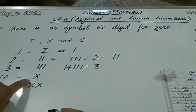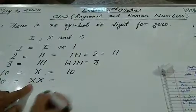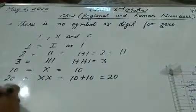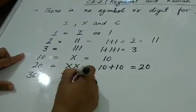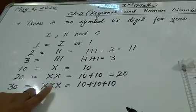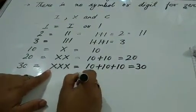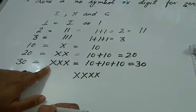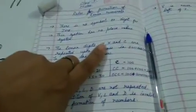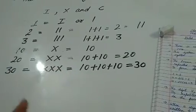For 10, symbol is X. How to write 20? X plus X — that is 20. Now 30: X, X and X — that is 10 plus 10 plus 10, three times, that is 30. Means अगर 40 लिखना है तो आप 4 बार X नहीं लिखोगे, that is wrong. So the third point: the Roman digits I, X and C — ये आपके repeat होंगे, repeat सिर्फ 3 बार.